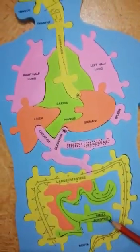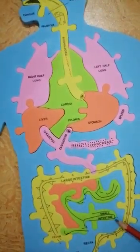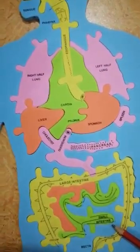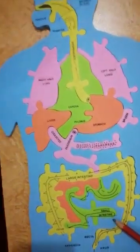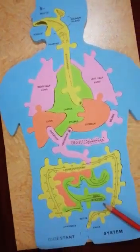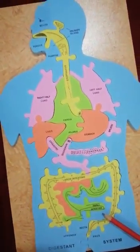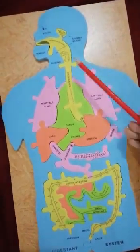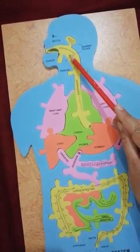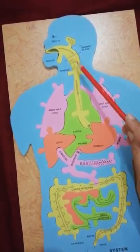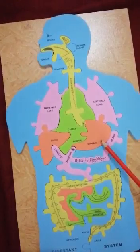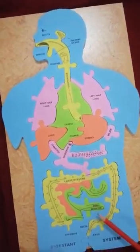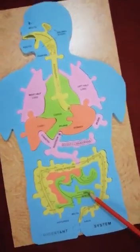Basically, the small intestine is responsible to digest fats, but due to the presence of several enzymes, the small intestine can also digest remaining undigested carbohydrates and proteins as well. Meaning, carbohydrates that are left undigested in the mouth, or proteins that could not be digested in the stomach — all of those are also digested in the small intestine.